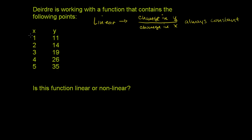Now, in this example, the change in x is always 1. We go from 1 to 2, 2 to 3, 3 to 4, 4 to 5. So in order for this function to be linear, our change in y needs to be constant, because we're just going to divide it by 1. So let's see if our change in y is constant.